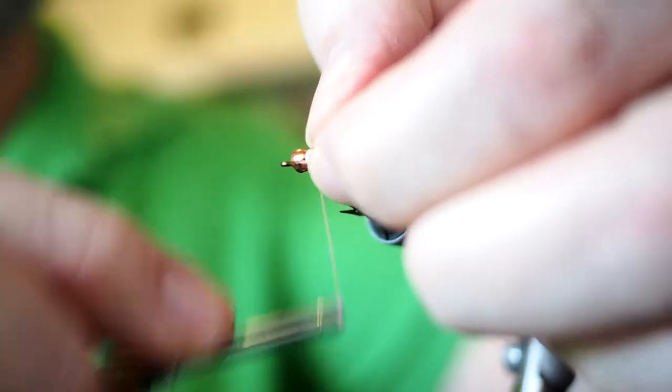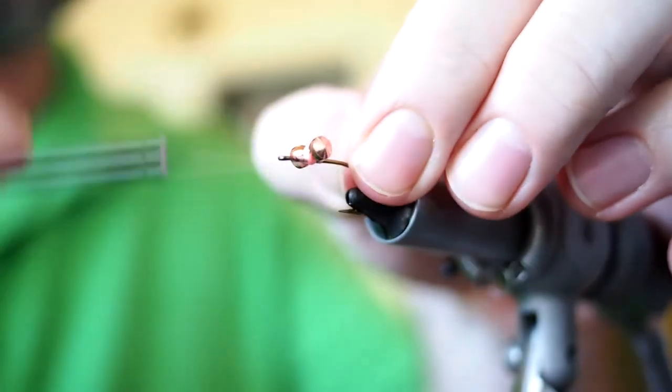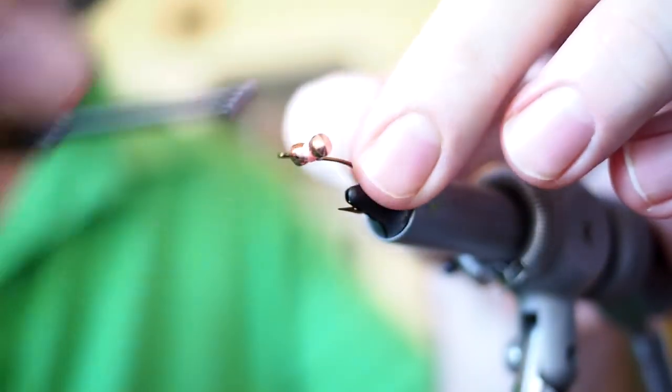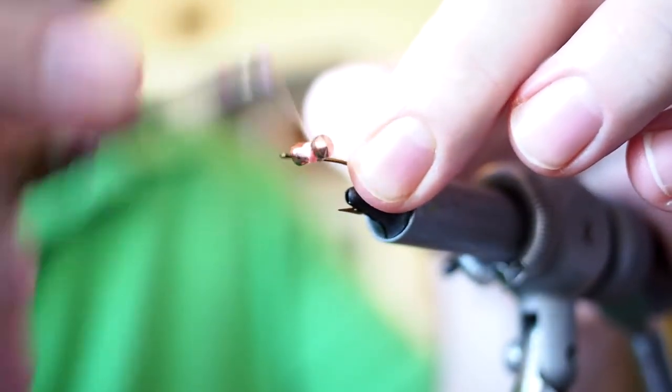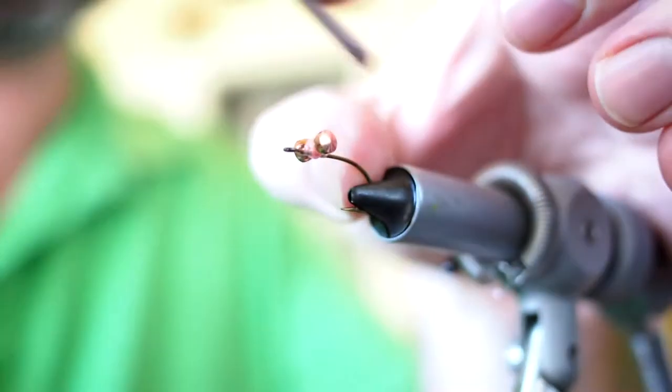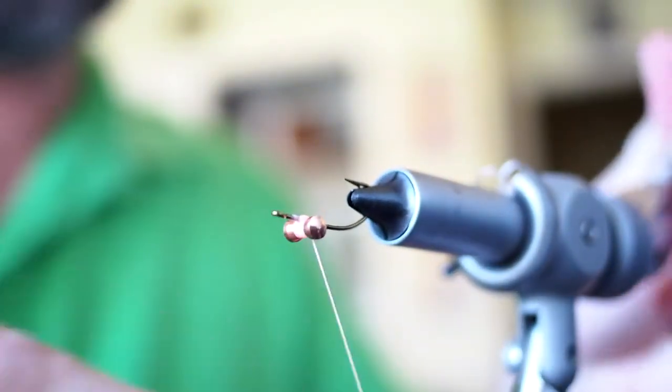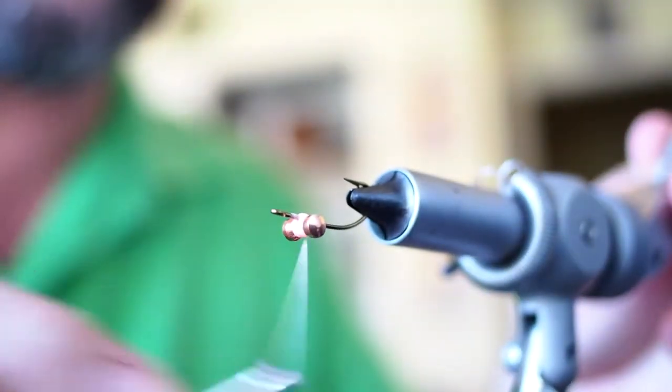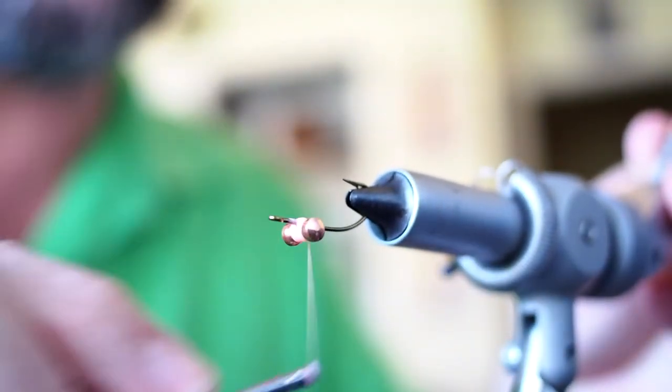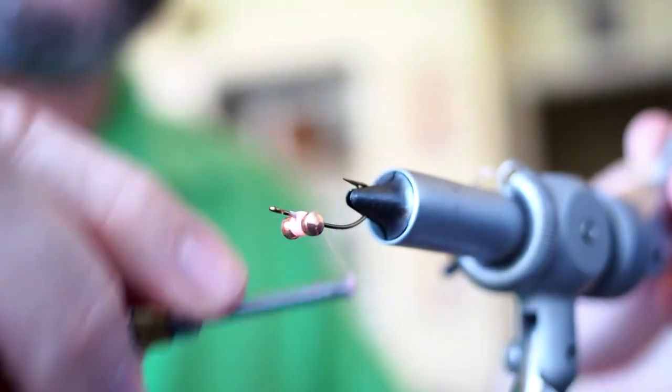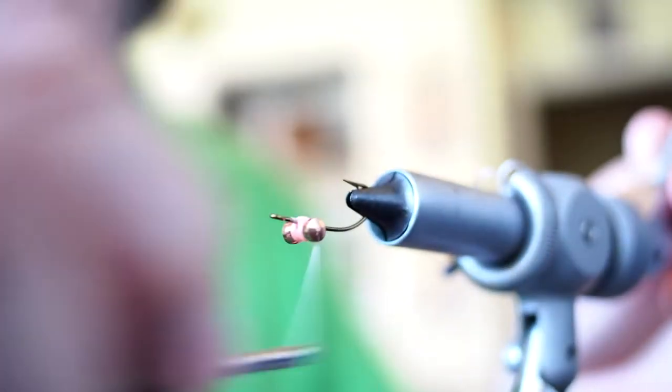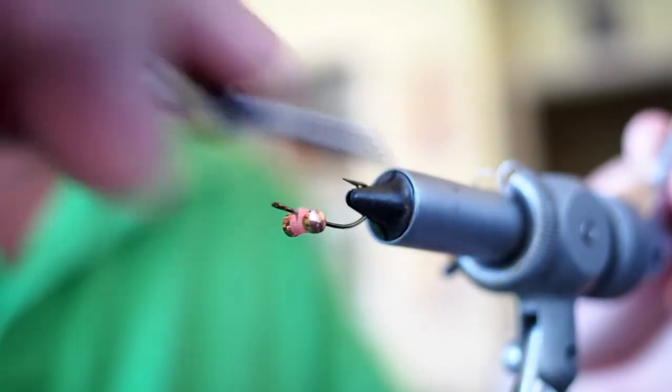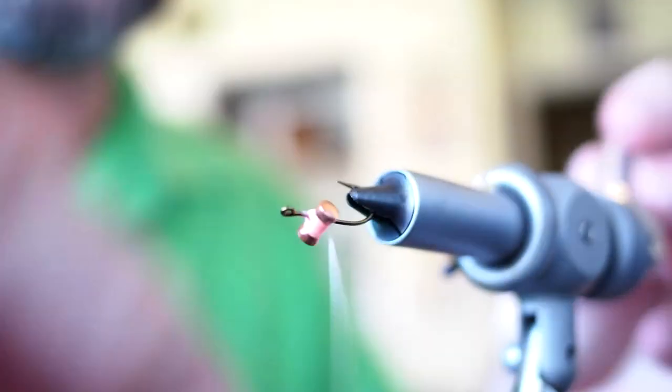So I'm going to go ahead and attach my dumbbell eye. Get it good and tight. Generally when I'm done with this fly, I will also hit it with a little bit of Sally Hansen's just to keep them durable. Okay, I think that's on there pretty good.